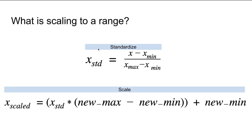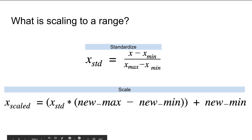In this video we are looking at scaling to a range. In the previous video we looked at standardization, where we subtracted the mean and divided by the standard deviation. In this case we subtract the minimum value and divide by the difference between the maximum and minimum value to get values in the range 0 to 1. If we want a different scale — say 100 to 200 — we apply a further transformation using: (new_max - new_min) * x_scaled + new_min.